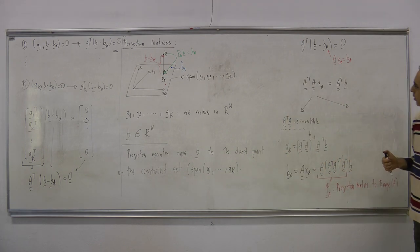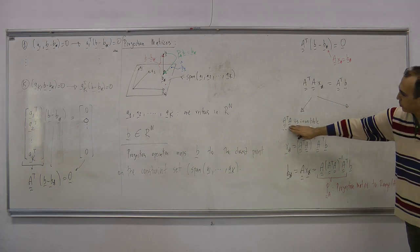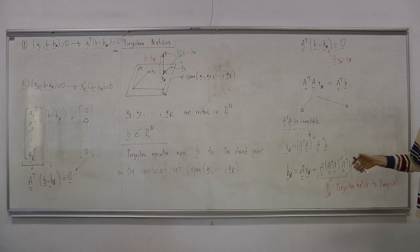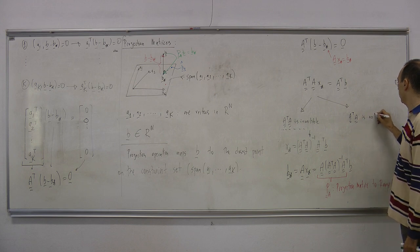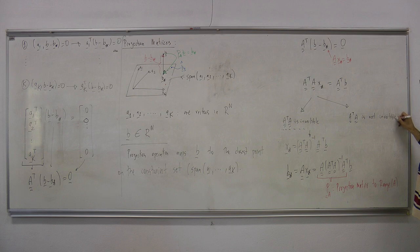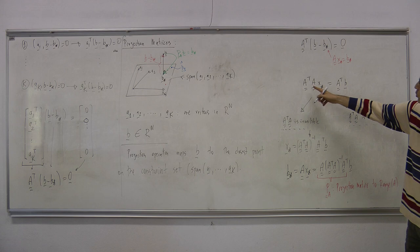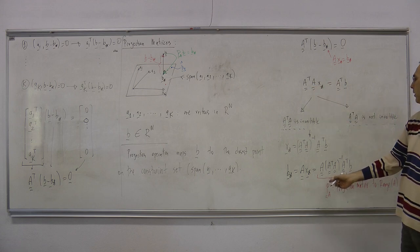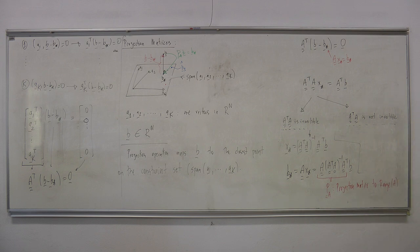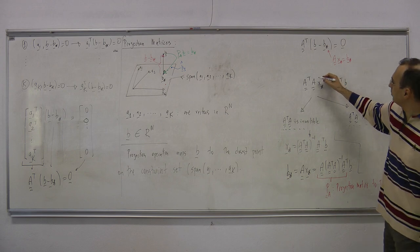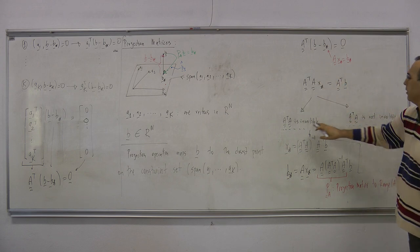If A transpose A is invertible, I have this as my solution. Just a note: if A transpose A is not invertible, then there is a difficulty. If it is invertible, there is a unique solution. If it's not invertible, we have some cases. But this is just a note — you don't have to pay much attention to this detail because it is somewhat more advanced. This equation system always has a solution whether or not A transpose A is invertible.